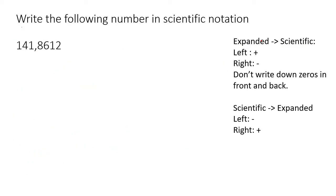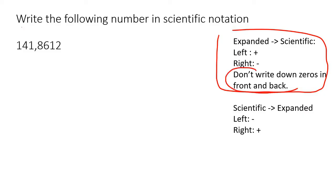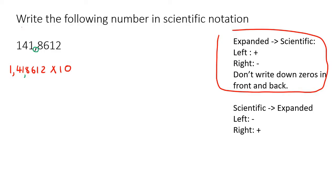Here's our first example — write the following number in scientific notation. Check: any zeros in the front? No. Any zeros at the back? No. So write down the first number — that's a 1 — put a comma, then put all the other numbers: 4, 1, 8, 6, 1, 2. Then say times 10. The comma was originally after the 2, and now it is after the 1. It moved two places to the left. Left means positive, so you put positive 2.